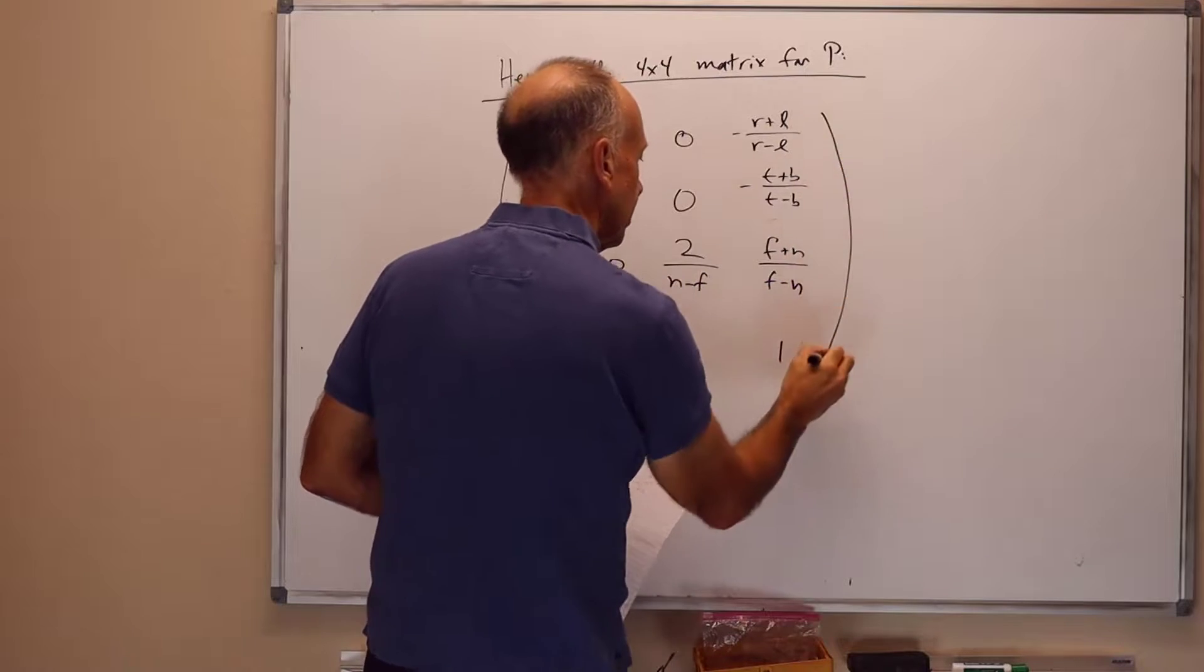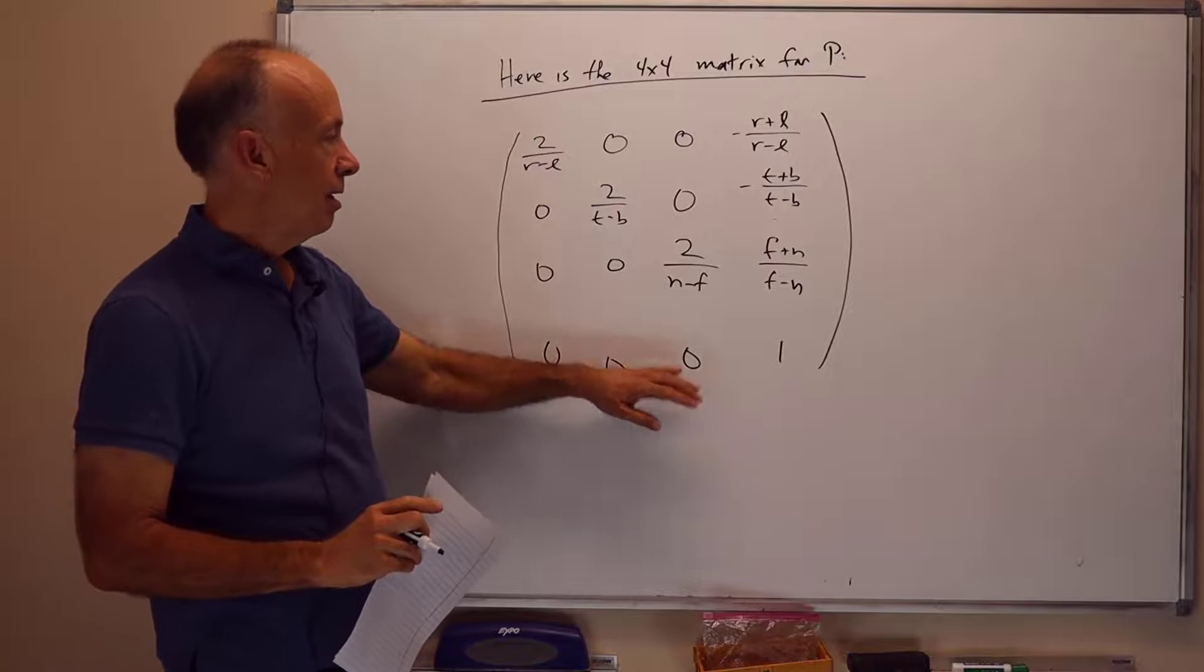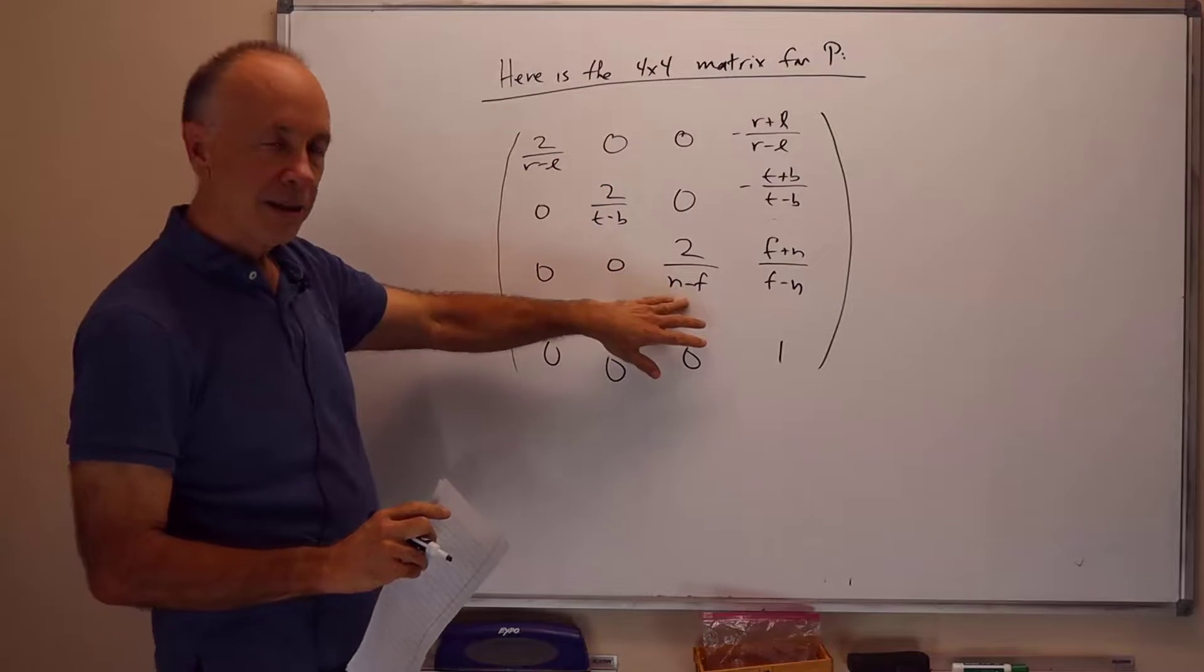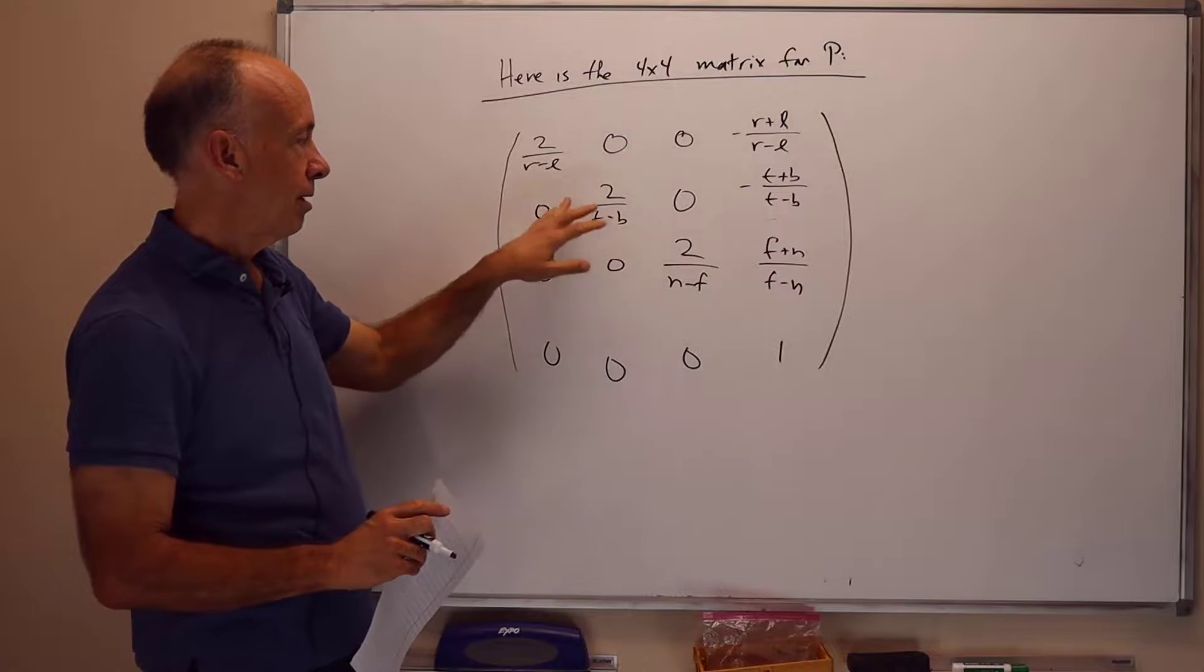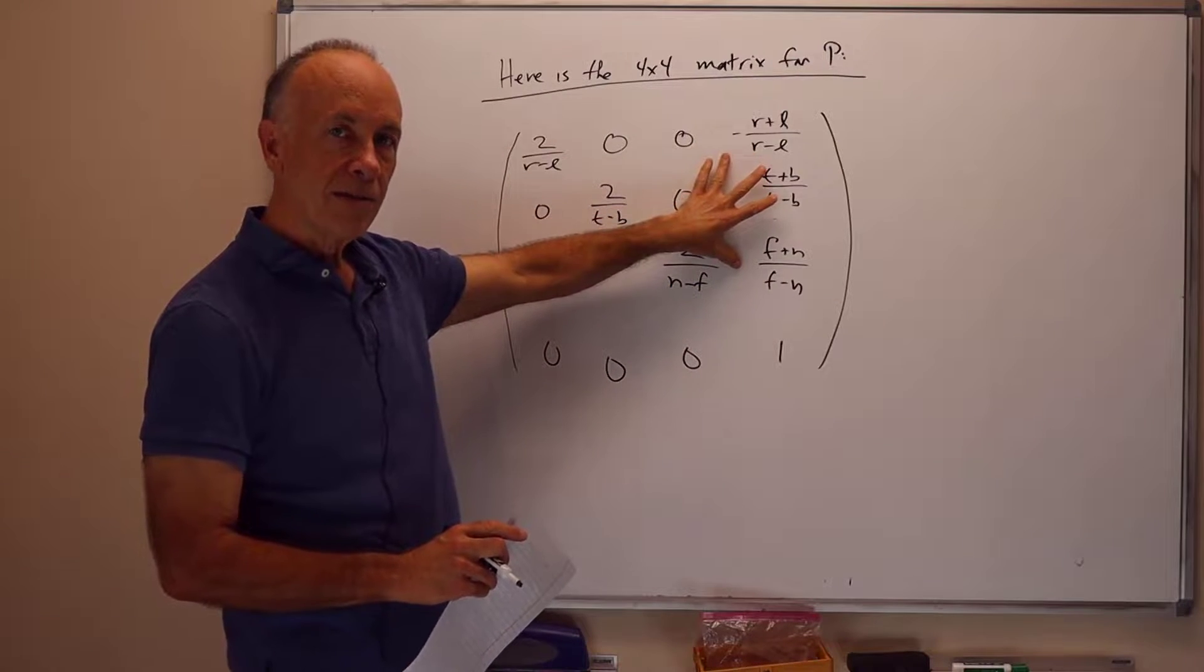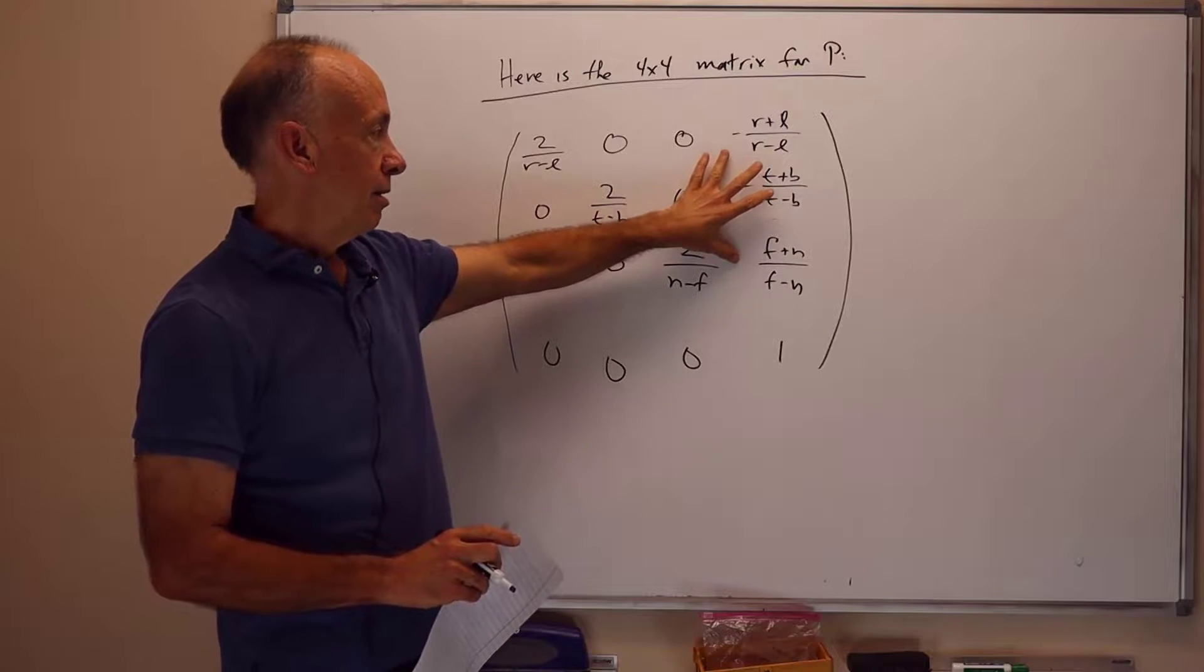And the translation amounts you can work out for yourself. I'll just write it up here: minus r plus l over r minus l, minus t plus b over t minus b, and f plus n over f minus n, and then a 1. So as usual, it's an affine map. The bottom row is 0, 0, 0, 1. We've just got the scaling factors here on the diagonal of the 3×3 part of the matrix, which is the linear component. And we have the appropriate translation amount to move the center of the cube to the origin.